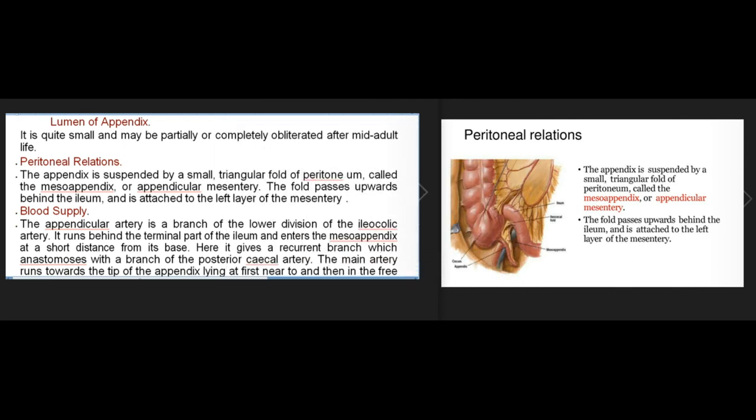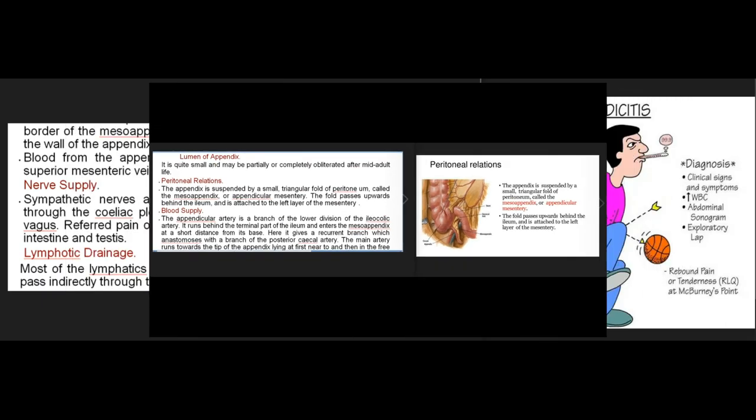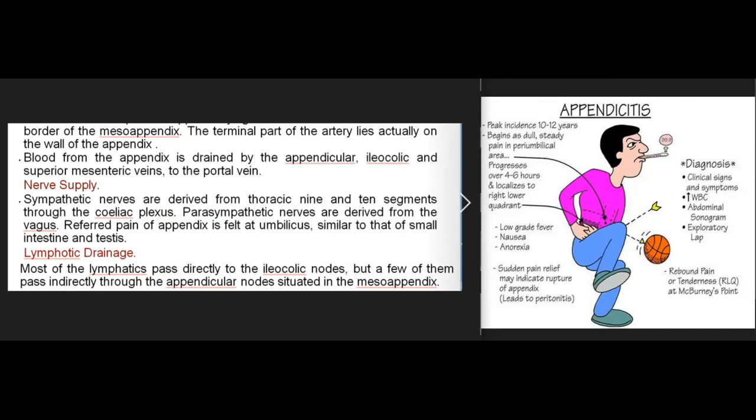The lumen of the appendix is quite small and may be partially or completely obliterated after mid-adult life. The appendix is suspended by a small triangular fold of peritoneum called the mesoappendix or appendicular mesentery, which passes upwards behind the ileum and is attached to the left layer of the mesentery. The appendicular artery is a branch of the lower division of the ileocolic artery. It runs behind the terminal ileum, enters the mesoappendix, gives a recurrent branch anastomosing with the posterior cecal artery, and runs towards the tip of the appendix in the free border of the mesoappendix.